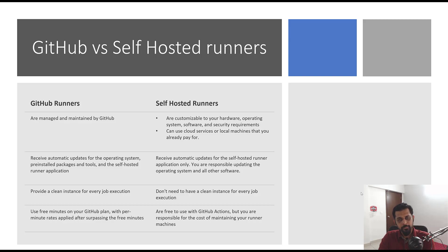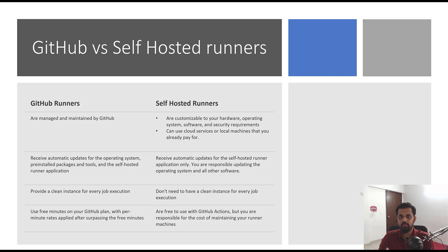From a pricing perspective, with a GitHub plan you get free minutes which you can use with GitHub runners, but once you exhaust those minutes it's billed per minute. If you run workflows for 200 minutes, you're charged for that. With self-hosted runners there is no running or build cost associated with workflow duration, but you do pay the maintenance cost for the infrastructure, operating system, and tools.